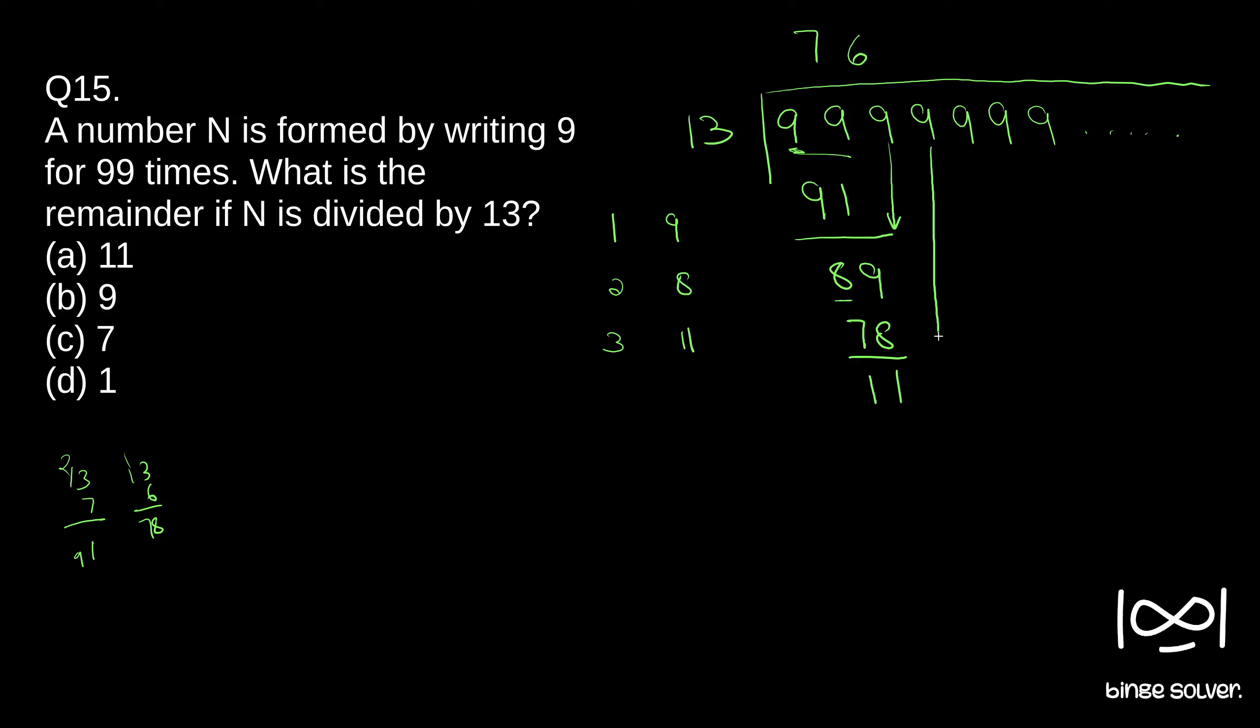Now we will bring one more nine down. 13 into eight is 18, three, 24, two, 104. 13 into nine, nine into three, 27, two, nine, 11, 117. So we would have 117 here, nine, and our remainder would have been two. For four nines, our remainder would have been two.